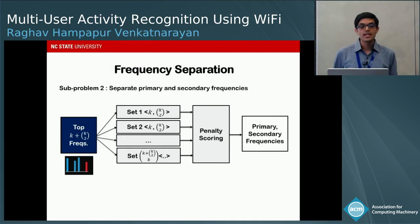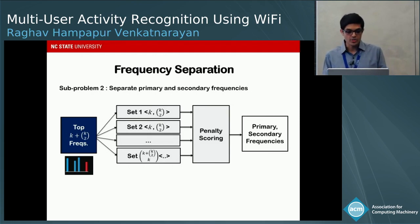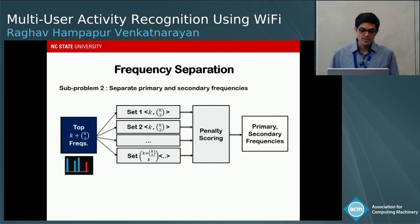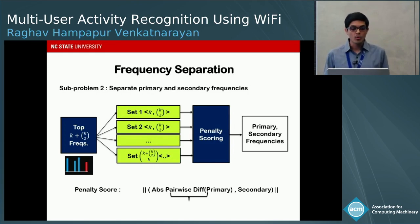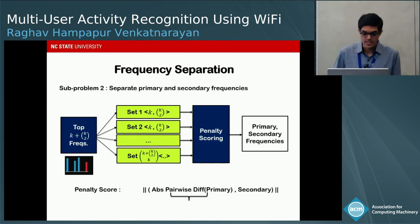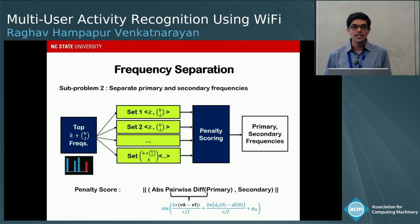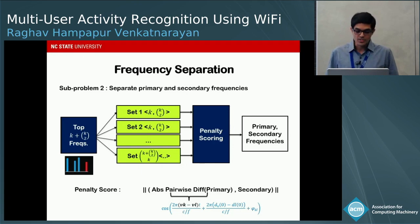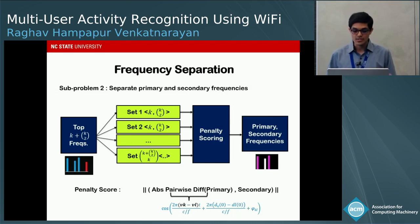Next, we separate primary and secondary frequencies. We select the top K + K-choose-2 frequencies, then select possible candidates for K primary frequencies with the remaining as K-choose-2 secondary frequencies. For each candidate set we perform penalty scoring — a Euclidean distance measuring how well the set matches the definition of primary and secondary frequencies, since secondary frequencies must equal the pairwise differences of primary frequencies. We select the set with the least penalty score and store only the primary frequencies as fine-grained features.